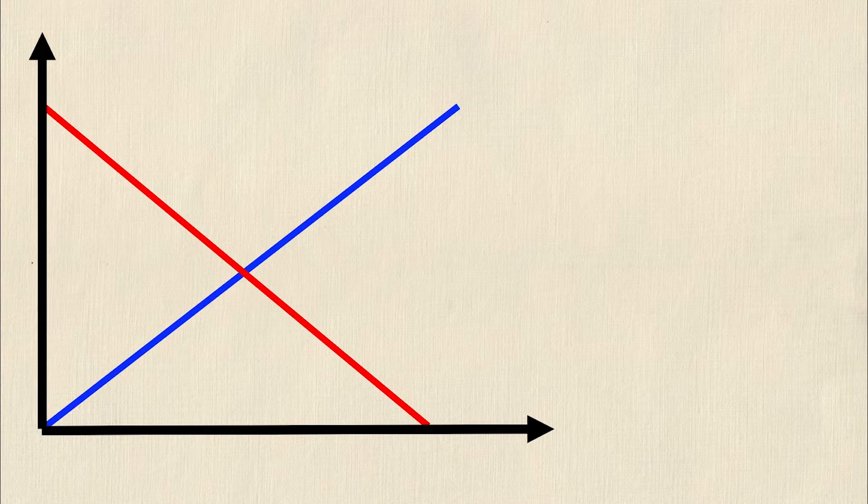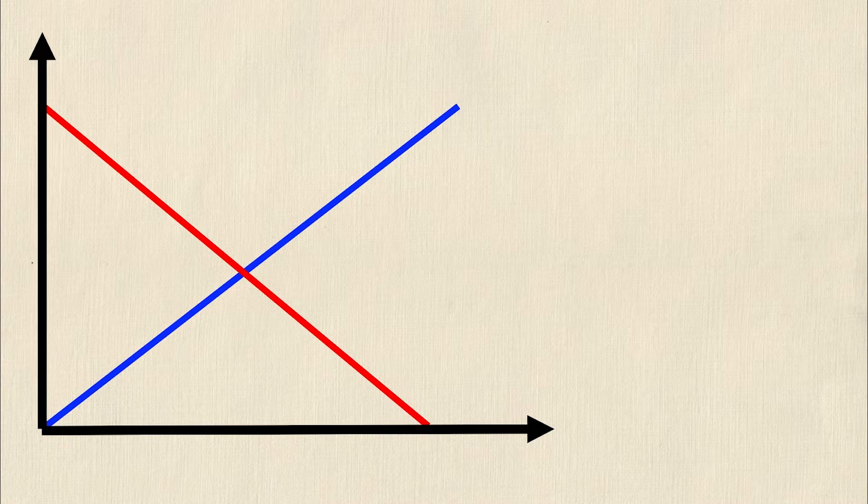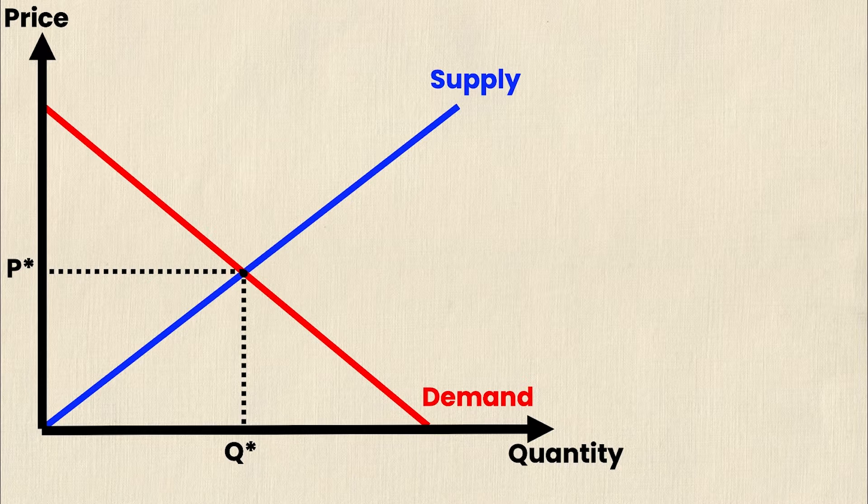We'll be starting off just like we did in our surplus video where we draw an axis, a general supply and demand intersection, and then of course we label this with all the generic supply and demand graph information. So price, quantity, P star, Q star, supply, and demand.